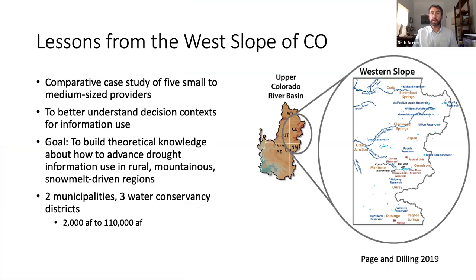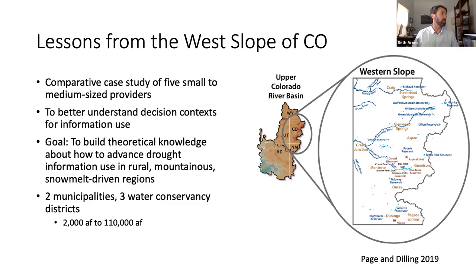I want to finish this brief talk by discussing some research that Western Water Assessment did — work done by Lisa Dilling and Rebecca Page over the last couple of years. Some of the work we do is on the social science side, understanding how and why and under what conditions users use certain kinds of climate information. They worked on a comparative case study of five small to medium-sized water providers on the western slope of Colorado to better understand their decision contexts and climate information uses. A major goal was to build theoretical knowledge about how to advance drought information in rural, mountainous, snowmelt-driven regions.